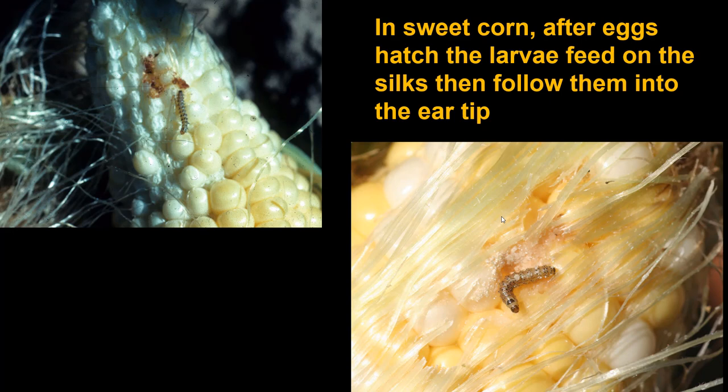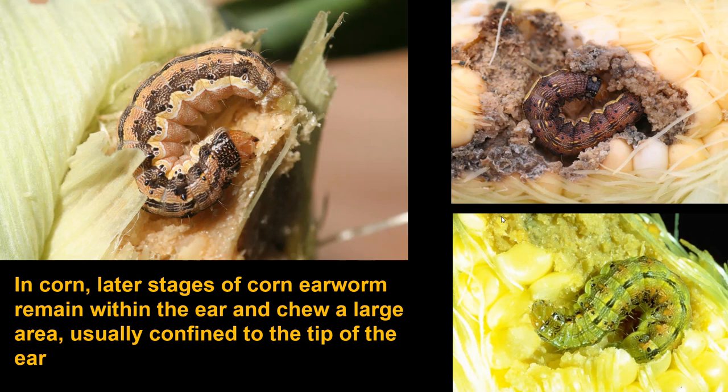In sweet corn, which is the system most often studied, after the eggs hatch the larvae feed on the silks, then follow them into the ear tip. In sweet corn, at that point you can no longer reach them with any insecticide, and they stay within the ear tip. Similarly, they would behave this way on a tomato, staying within the plant on which they're feeding.